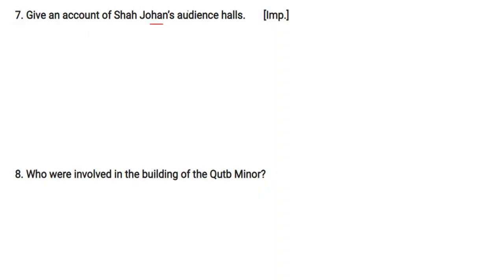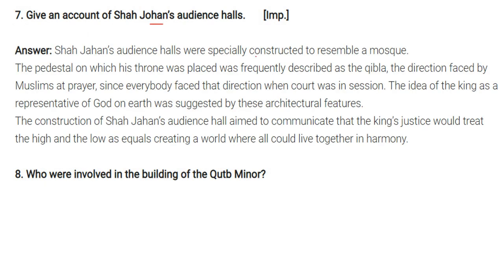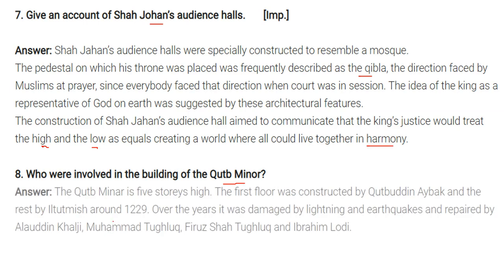Shah Jahan's audience hall was specially constructed to resemble a mosque. The pedestal on which his throne was placed was frequently described as the qibla — the direction faced by Muslims at prayer — since everybody faced that direction when court was in session. The idea of the king as a representative of god on earth was suggested by these architectural features. The construction of Shah Jahan's audience hall aimed to communicate that the king's justice would treat the high and the low equally, creating a world where all could live in harmony and tranquility.